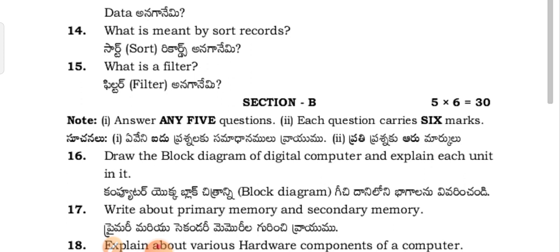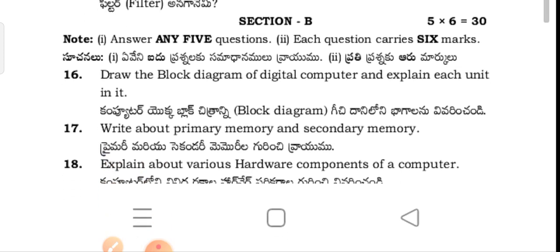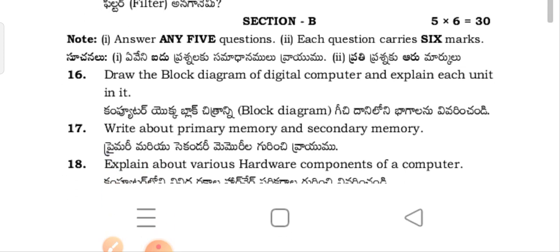You have 15 questions in Section A, but this year — just like GFC — the choice and everything will be similar to GFC only. Don't expect too much choice in Section A or Section B. In Section A there is no choice at all; they will give 10 questions and you have to write all 10.